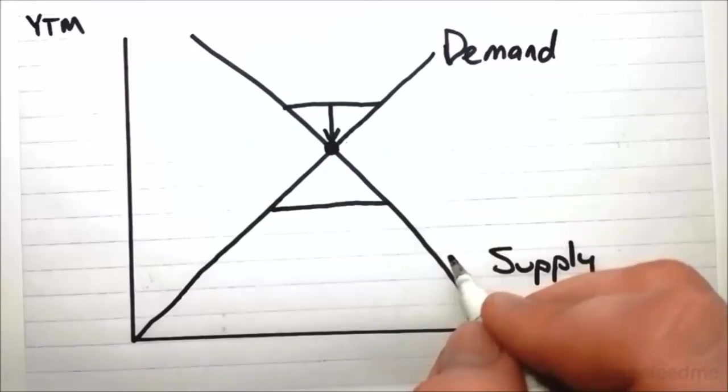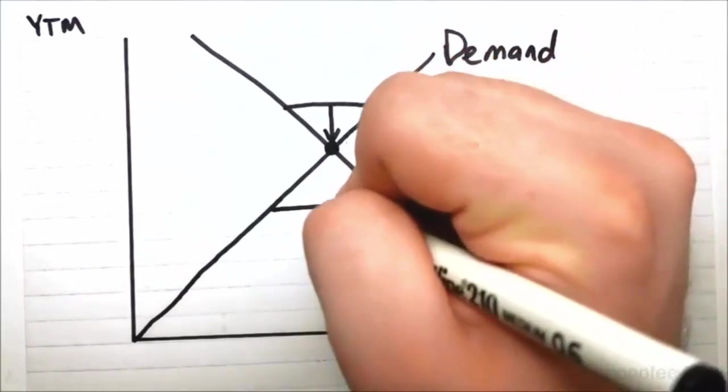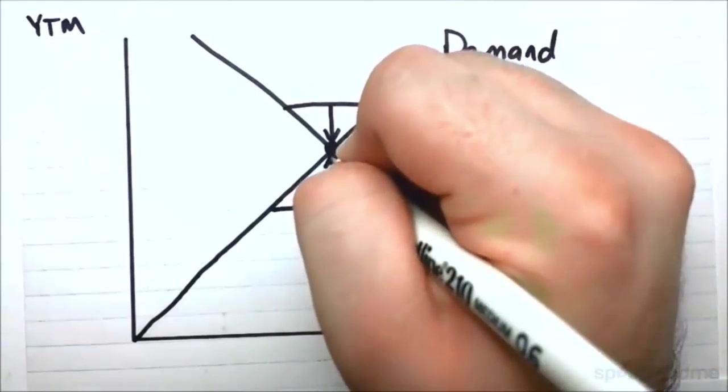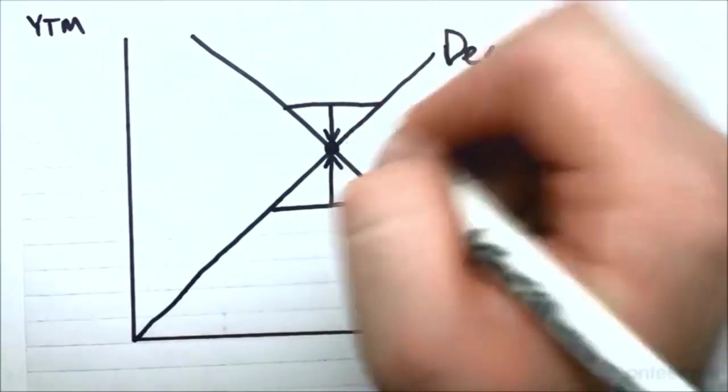And so our informed buyers will then say, well if we can purchase at this higher yield to maturity, then let's stop buying it at the low one. And so you get a pressure driving it up. And so we get an equilibrium here as a result of these two opposing forces.